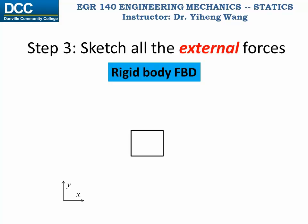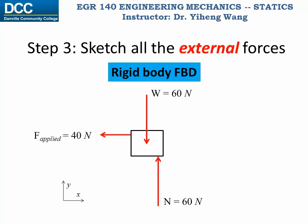Then we need to demonstrate all the external forces acting on the object. In this case, the external forces include the dog's weight, which is the gravitational force exerted by the earth on the dog; the normal force, which is the support force exerted by the floor on the dog; and the applied force, directly exerted by the string on the dog.